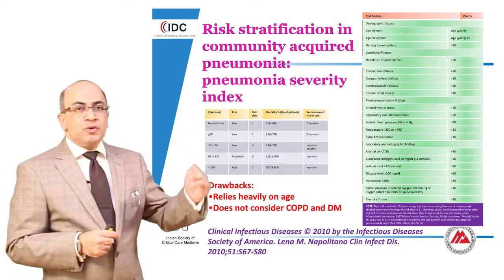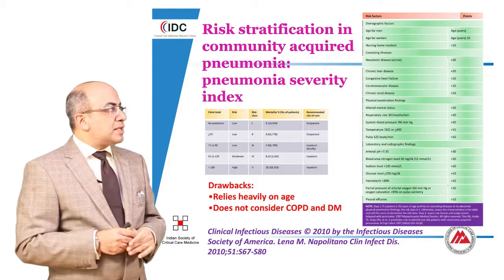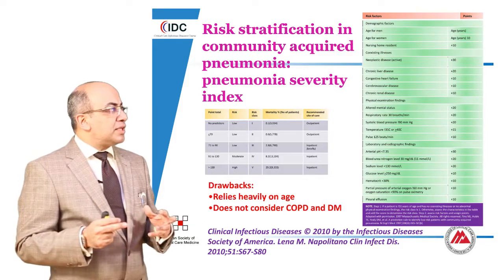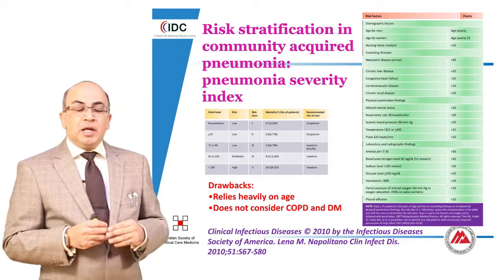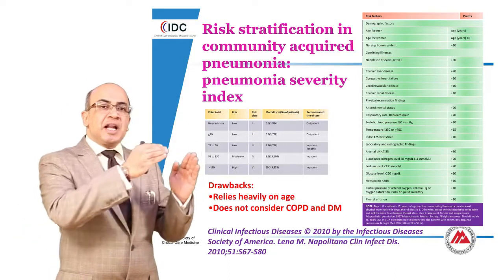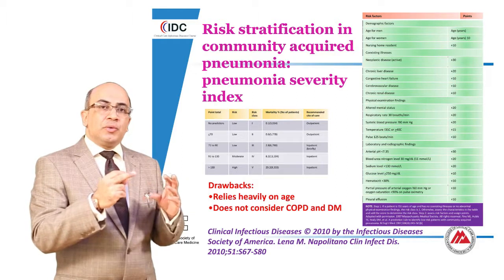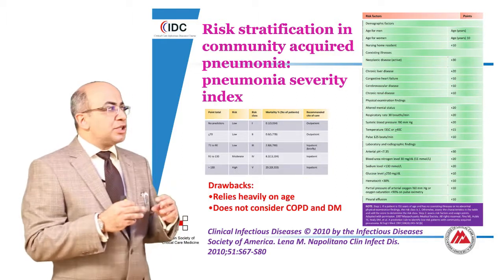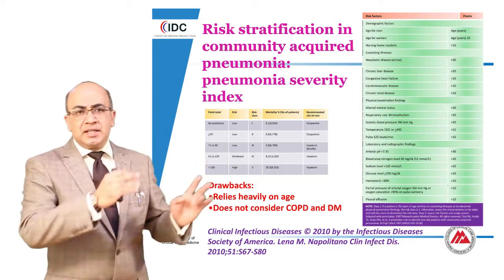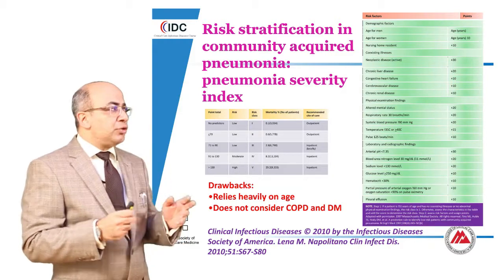One of them is the Pneumonia Severity Index, which takes into account demographic factors, coexisting illnesses, and physical examination findings — whether the patient has altered mental status, blood pressure, temperature, pulse — as well as laboratory and radiological findings. Each parameter is given a score, and based on that score, the risk of mortality and the appropriate site of monitoring is determined. However, this is a very complex tool for stratification and cannot be used in an OPD setting on a day-to-day basis.